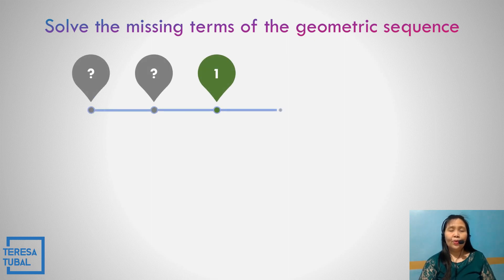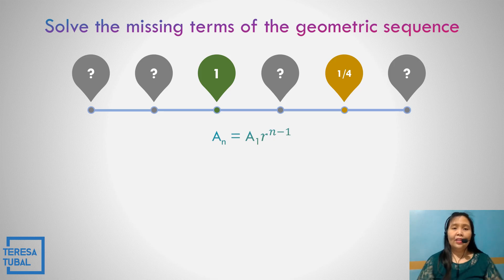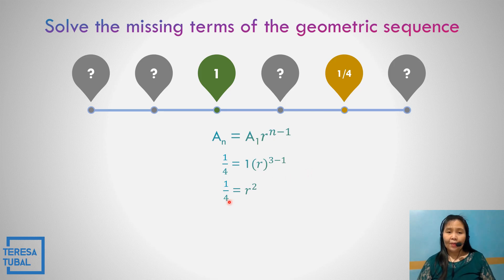How about number 2? The sequence has first term 1 and last term 1 over 4. Again, the formula is a sub n equals a sub 1 times r raised to n minus 1. The first term is 1, the last term is 1 over 4, and the number of terms is 3, so the exponent is 3 minus 1 equals 2. That gives 1 over 4 equals r squared. Writing the square root on both sides: r equals 1 over 2, since the square root of 1 is 1 and the square root of 4 is 2.